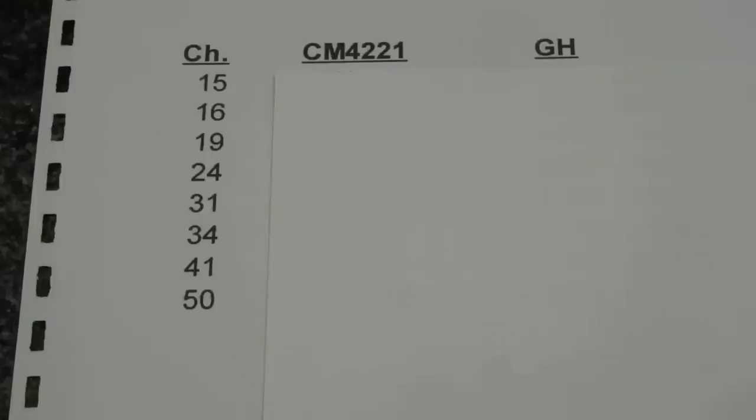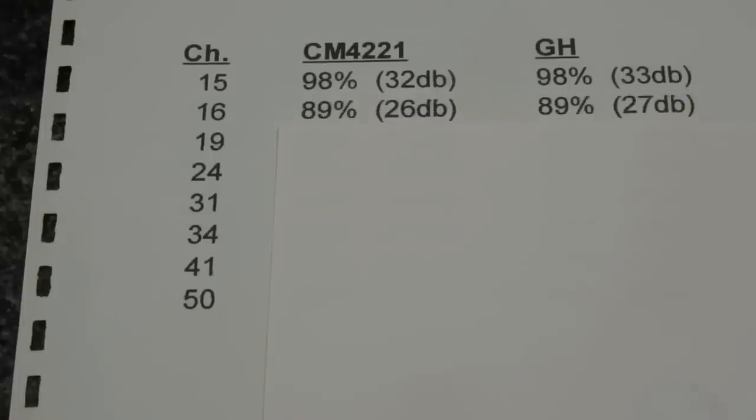So for channel 15, which channel 15 in this area is extremely strong, very close. You literally could just stick any wire outside and it'll pick it up, or inside for that matter. So for the first channel, both antennas picked it up. The TV reported 98%, which I think is the highest it goes. As far as the signal-to-noise ratio, you can see the gray Hoverman got one decibel higher. So that's a slight win for the homemade antenna. Channel 16, you can see they're very similar. Again, both 89%, but one decibel higher on the signal-to-noise ratio. So again, slightly higher for the homemade.